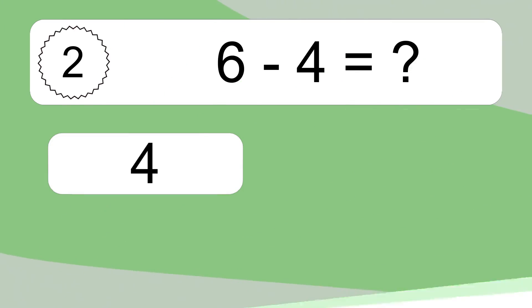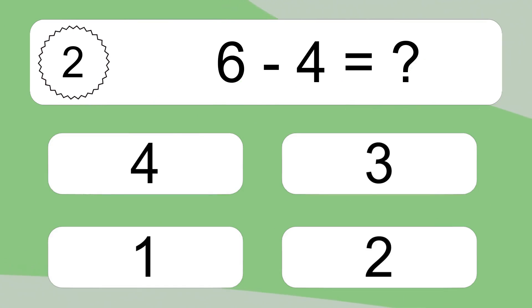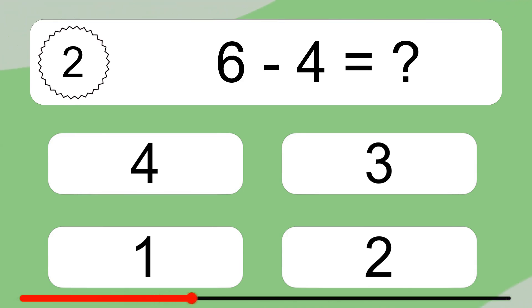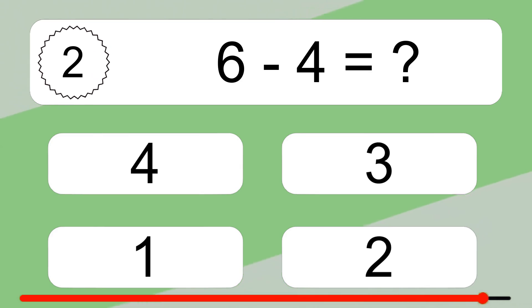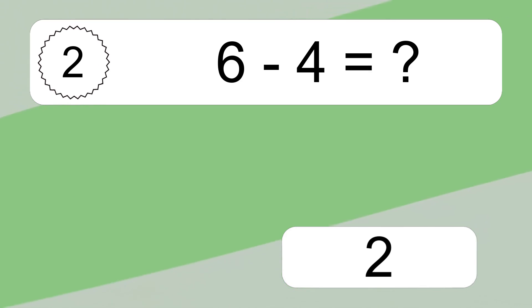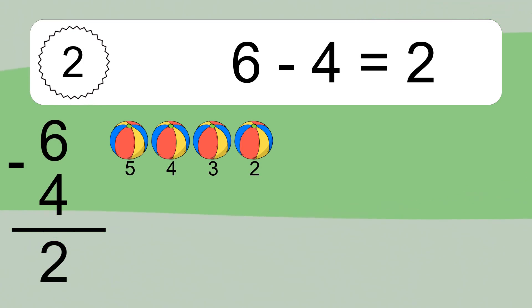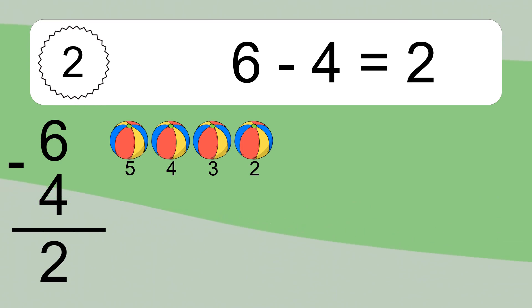6 minus 4 equals what? 6 minus 4 equals 2. Let's count it: 5, 4, 3, 2.